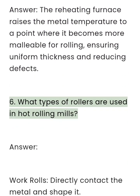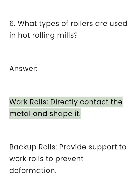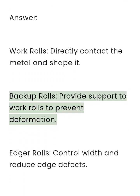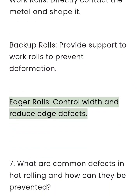Question 6: What types of rollers are used in hot rolling mills? Answer: Work rolls — directly contact the metal and shape it. Backup rolls — provide support to work rolls to prevent deformation. Edge rolls — control width and reduce edge defects.